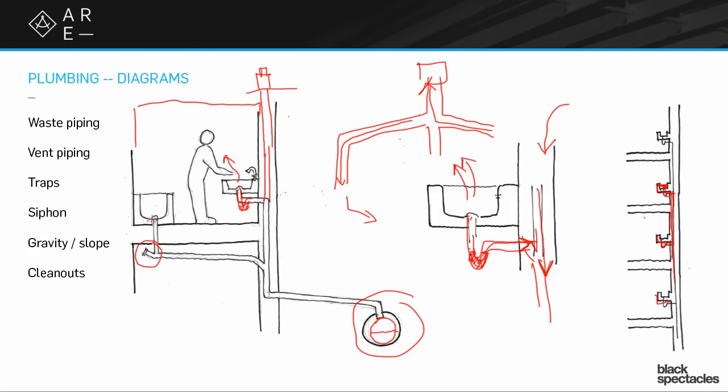So every fixture will have that trap, and every fixture will have that vent pipe going up to the roof. They might go up by itself. It might connect over to another one. But all of those things will be interconnected, both going down and going up.